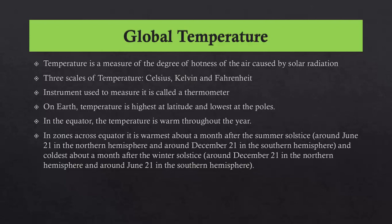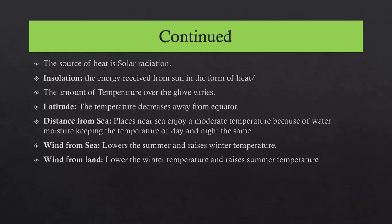In the equator, the temperature is warm throughout the year. In zones across the equator, it is warmest about a month after the summer solstice, and coldest about a month after the winter solstice. The source of heat is solar radiation. The energy received from the sun in the form of heat is called insolation. The amount of temperature over the globe varies. Latitude means temperature decreases away from the equator. Places near the sea enjoy a moderate temperature because water moisture keeps the temperature of day and night similar. Wind from the sea lowers summer temperature and raises winter temperature; wind from the land lowers winter temperature and raises summer temperature. Temperature depends upon factors like latitude, altitude, and duration of sunlight.